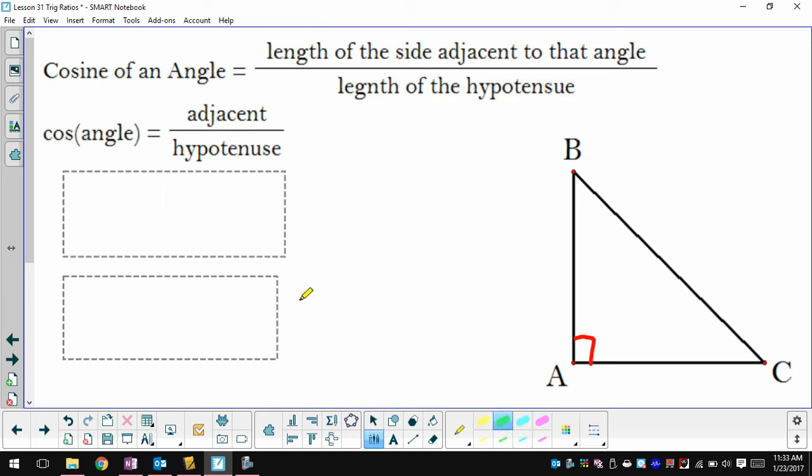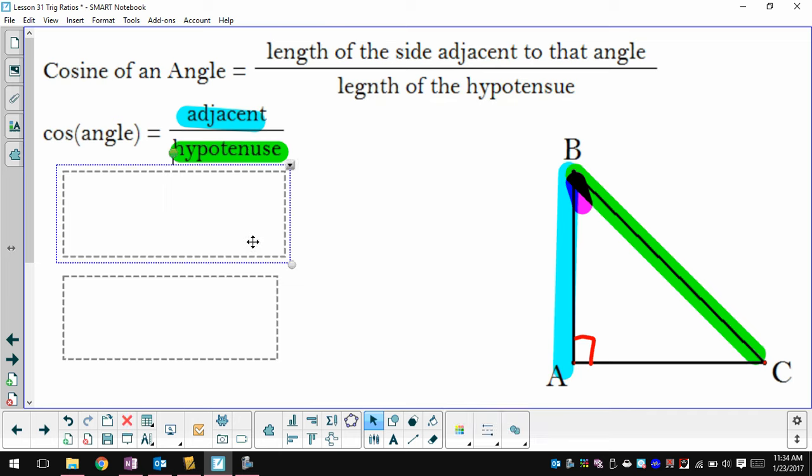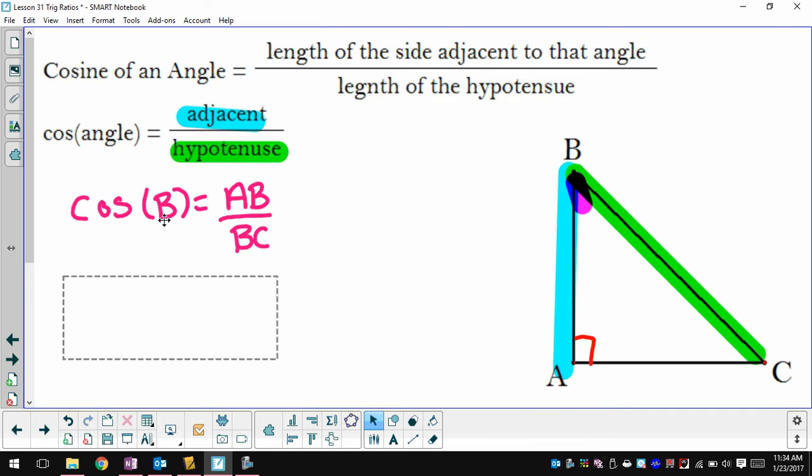Similar to that, we have the cosine. Cosine is a different pair of sides. This time we have the adjacent side and the hypotenuse. So if I look at angle B, the side adjacent to it is basically the side that is not opposite and is also not the hypotenuse. So the side adjacent to angle B is AB, and my hypotenuse is still BC. So my cosine for angle B is the length of segment AB divided by the length of segment BC. Similarly, if I want to do the cosine of angle C, now my adjacent side is AC, my hypotenuse is still BC.